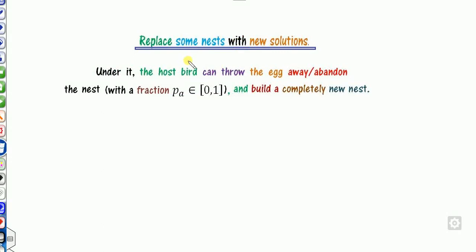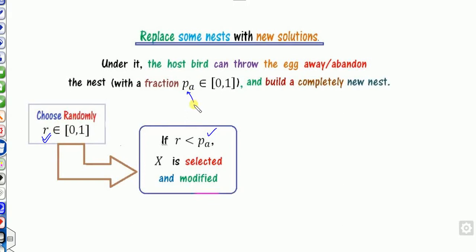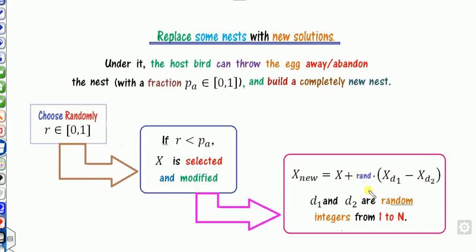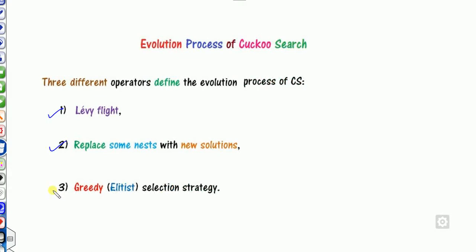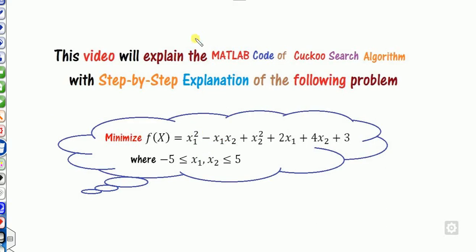After updating solutions via Lévy flights, we replace some old best solutions using a fraction Pa — the discovery probability. We choose a random number; if it is less than this pre-assigned probability Pa, we modify the solution using an equation where d1 and d2 are random numbers. We will implement this in MATLAB in three phases: Lévy flights, replace nests, and greedy selection. Make sure to convert any constrained problem to unconstrained before applying this code.